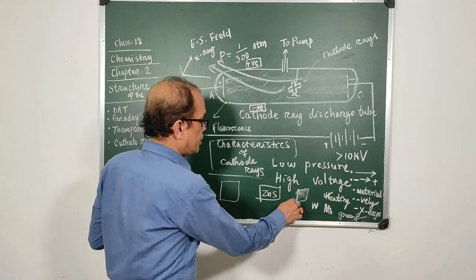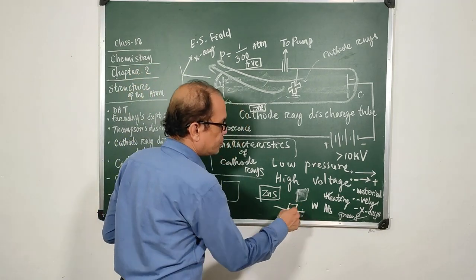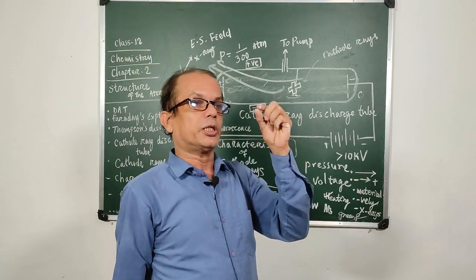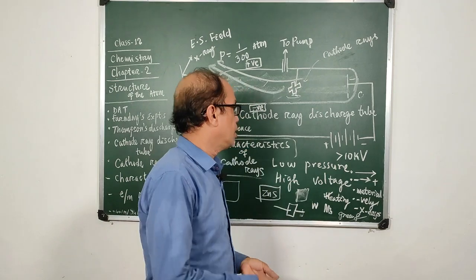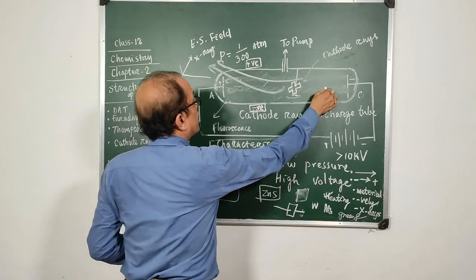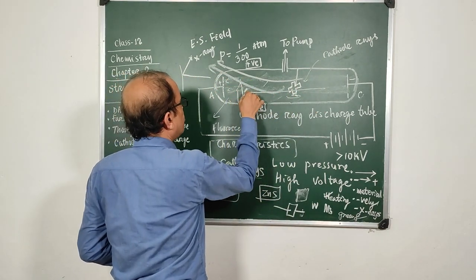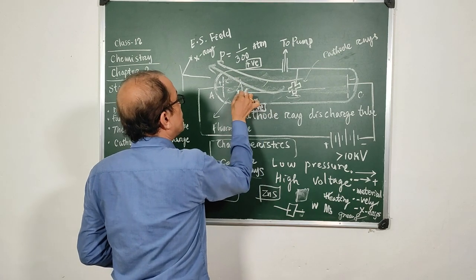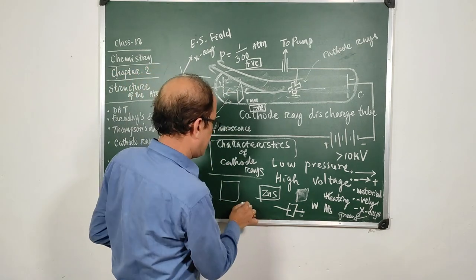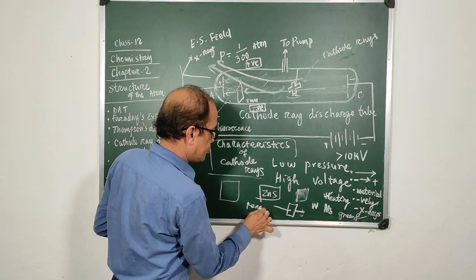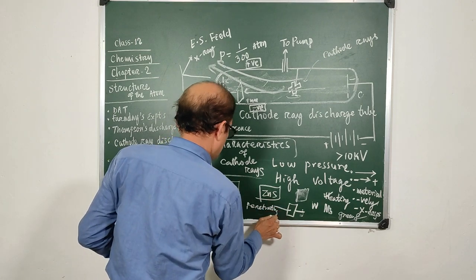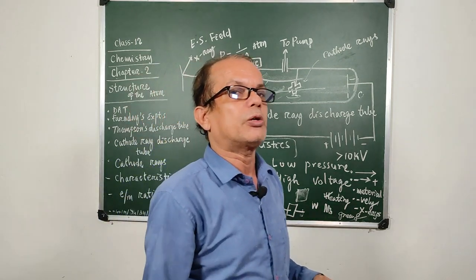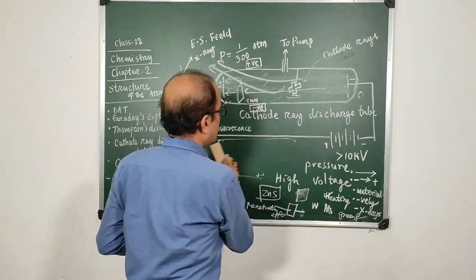The next property was the penetrating effect. If you place a very thin aluminum foil — say 0.3 mm — in the path of the cathode ray, or even a 1 mm thick aluminum foil, the ray will pass through it. This means cathode rays have a penetrating effect.